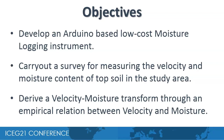The main objectives of this study are to develop an Arduino-based low-cost moisture logging instrument, carry out a survey for measuring the velocity and moisture content of topsoil in the study area, and derive a velocity moisture transform through an empirical relation between velocity and moisture.